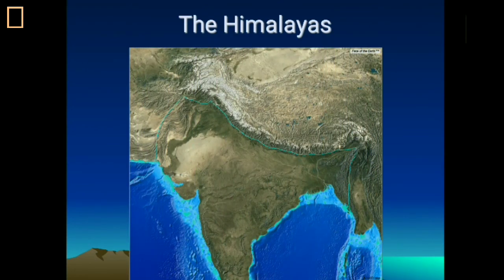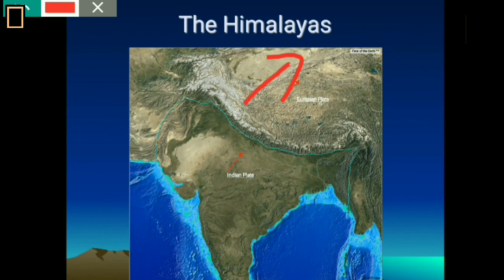In the case of the Himalayas, two plates are involved: the Eurasian plate and the Indian plate. The Eurasian plate corresponds to the Angara land from the geosyncline concept. Both are moving in the northeast direction. The Indian plate — more precisely the Indo-Australian plate — moves faster than the Eurasian plate because its density is higher. As a result, the sediments of the Tethys geosyncline were compressed and uplifted as the Himalayan mountains. This is how the Himalaya was formed.